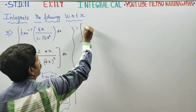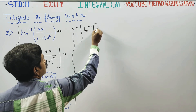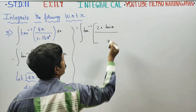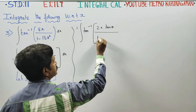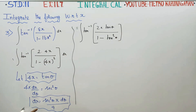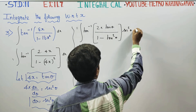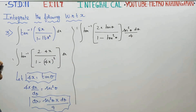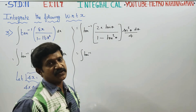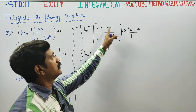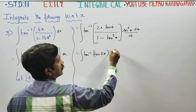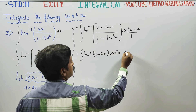Integration — tan inverse stays, 2 stays, and 4x is replaced by tan theta. So it becomes tan inverse of 2 tan theta divided by 1 minus tan square theta, into secant square theta d theta by 4. Using the trigonometric formula: 2 tan theta over 1 minus tan square theta equals tan 2 theta — the double angle formula. So the integral becomes tan inverse of tan 2 theta, into secant square theta d theta by 4.